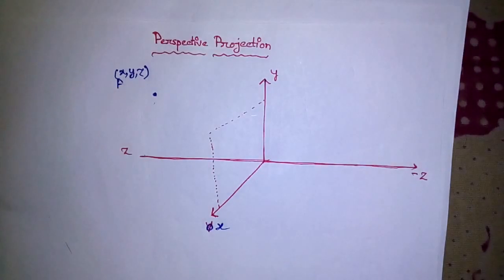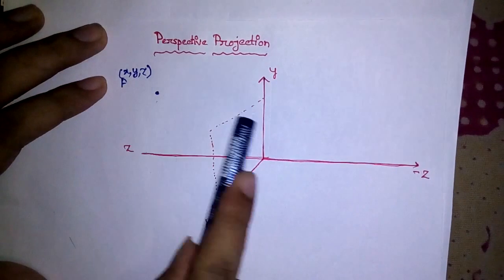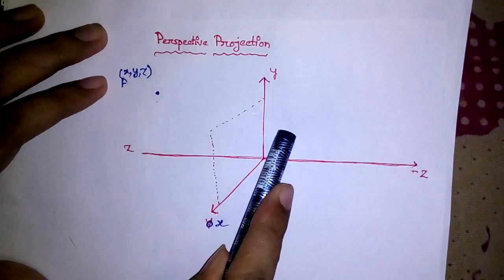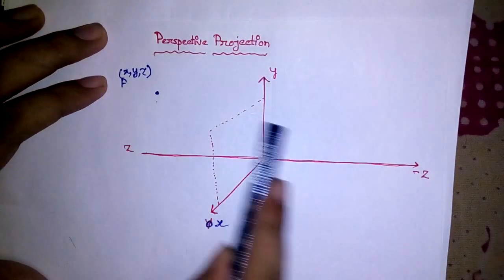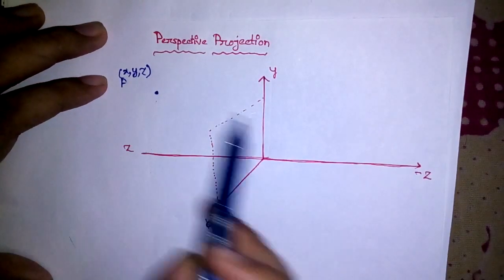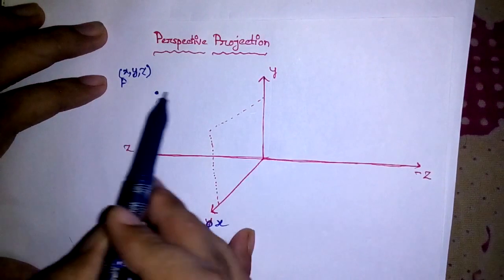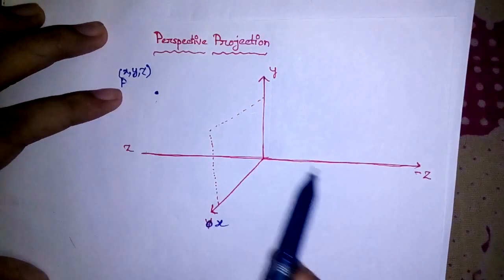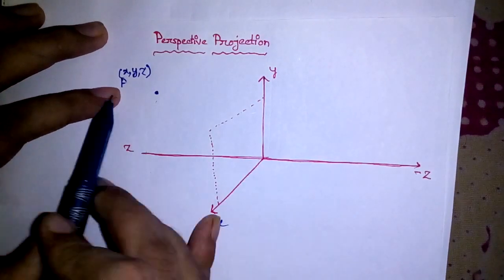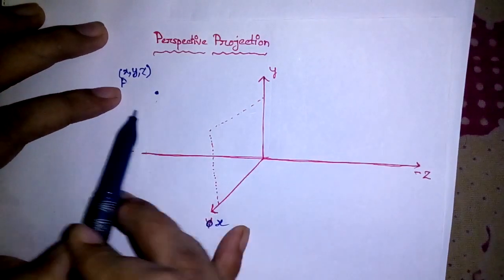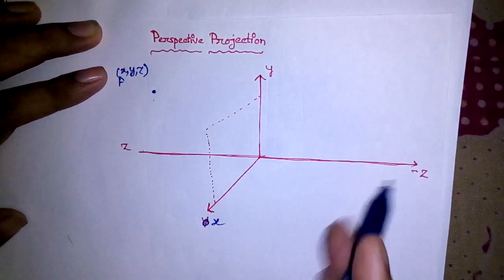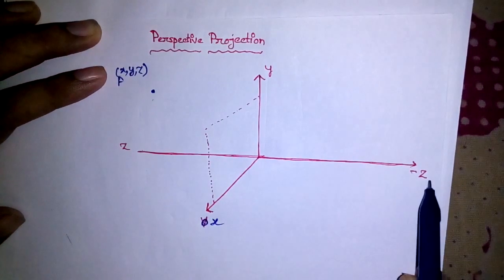Let's talk about perspective projection. In the case of perspective projection, all the rays coming out will not be parallel to each other — they will converge at some point. Let's say that this is a point of an object, and all the rays coming out from it will converge somewhere at the negative Z axis.